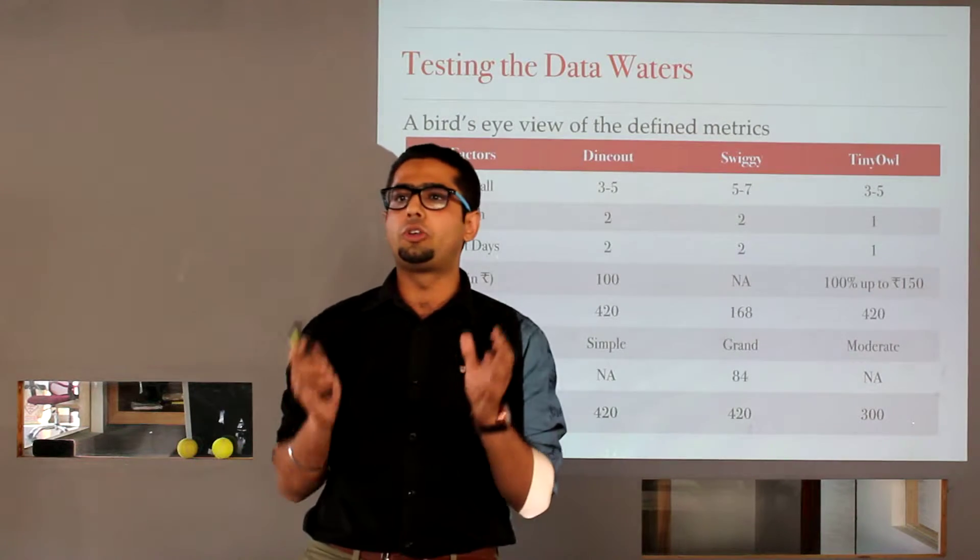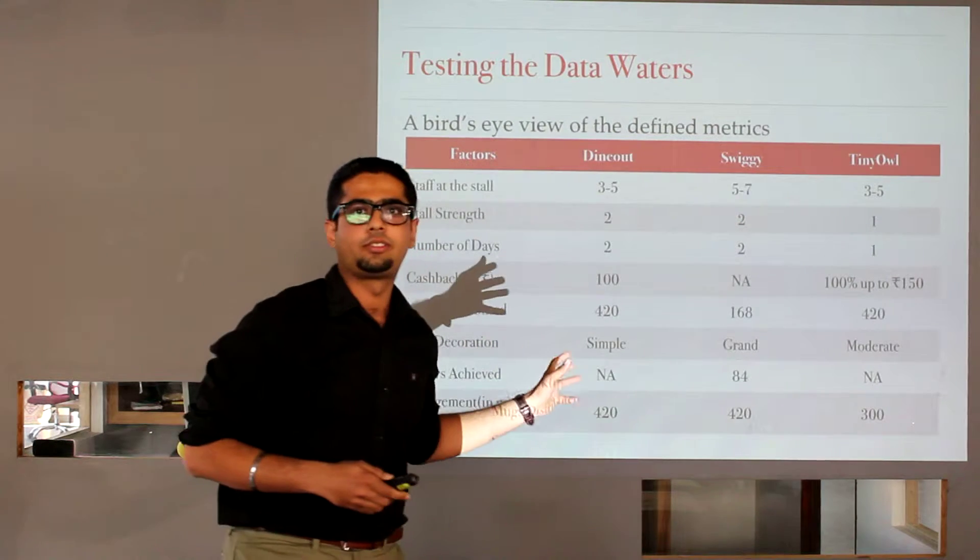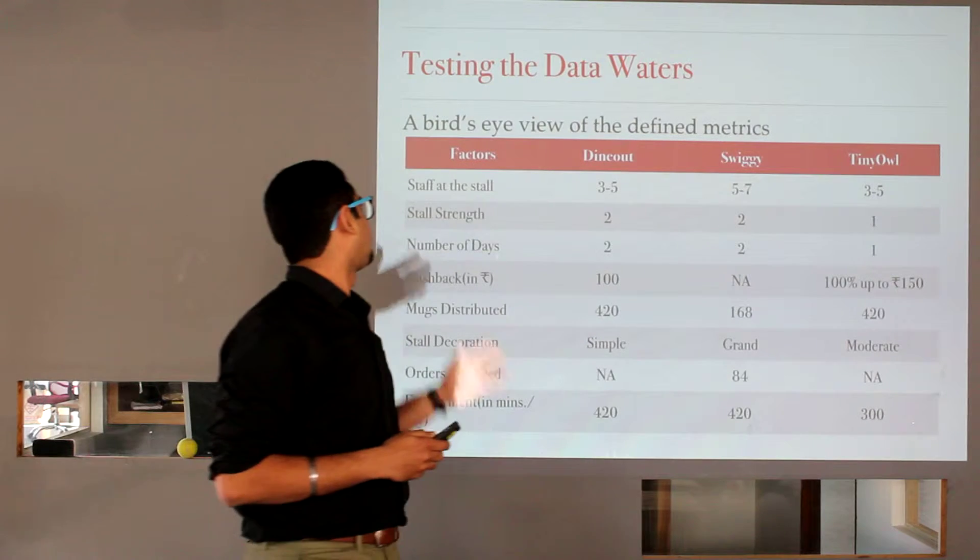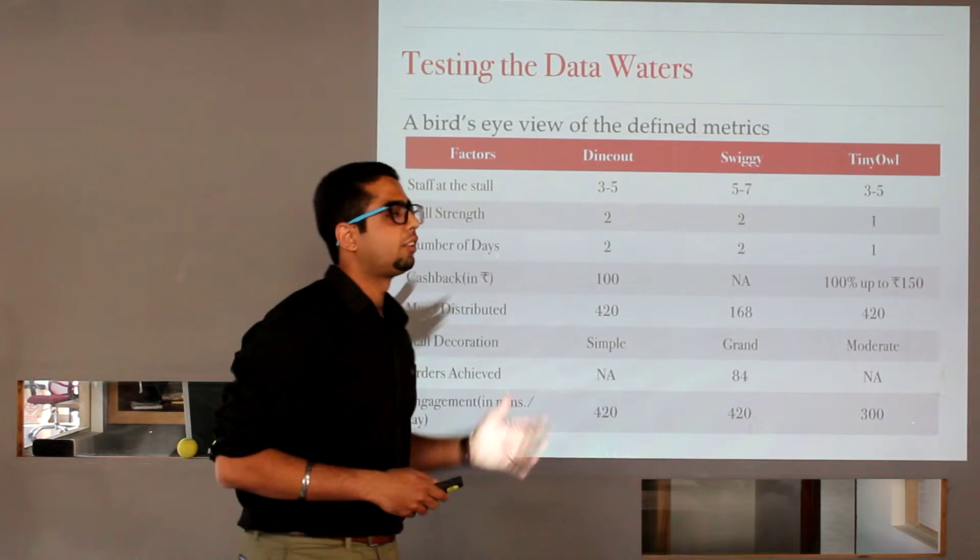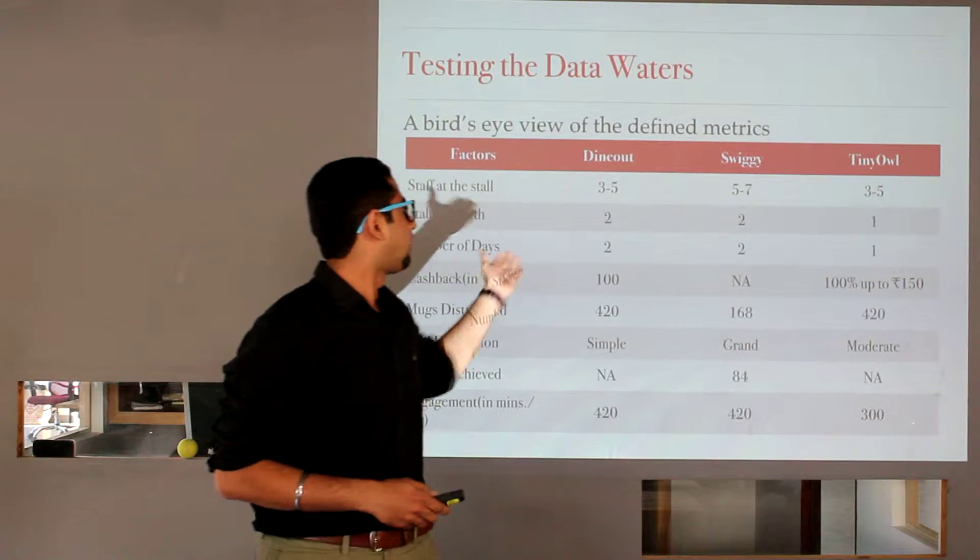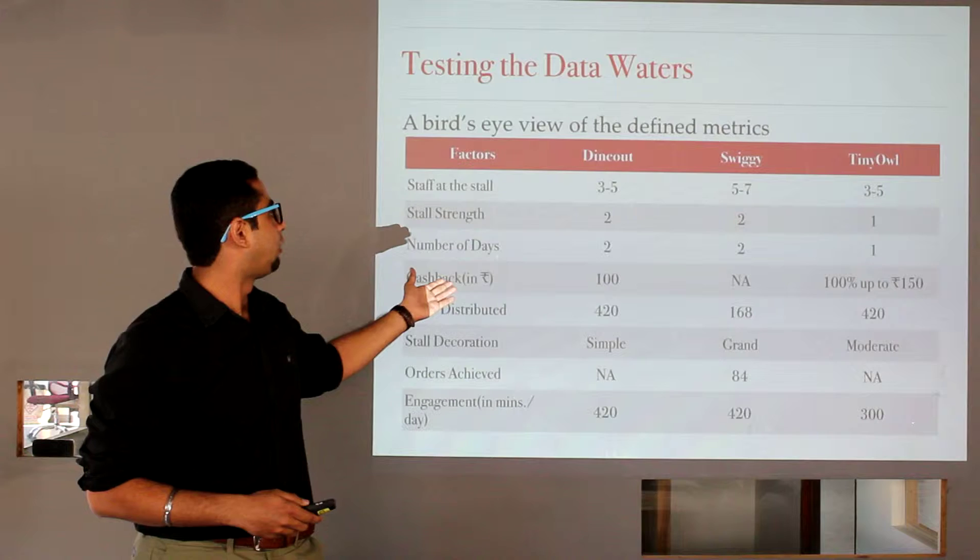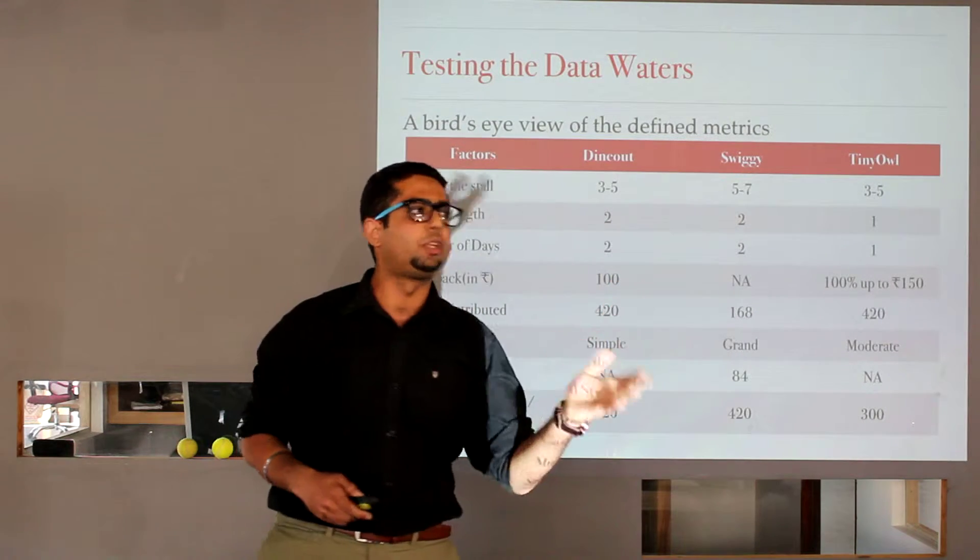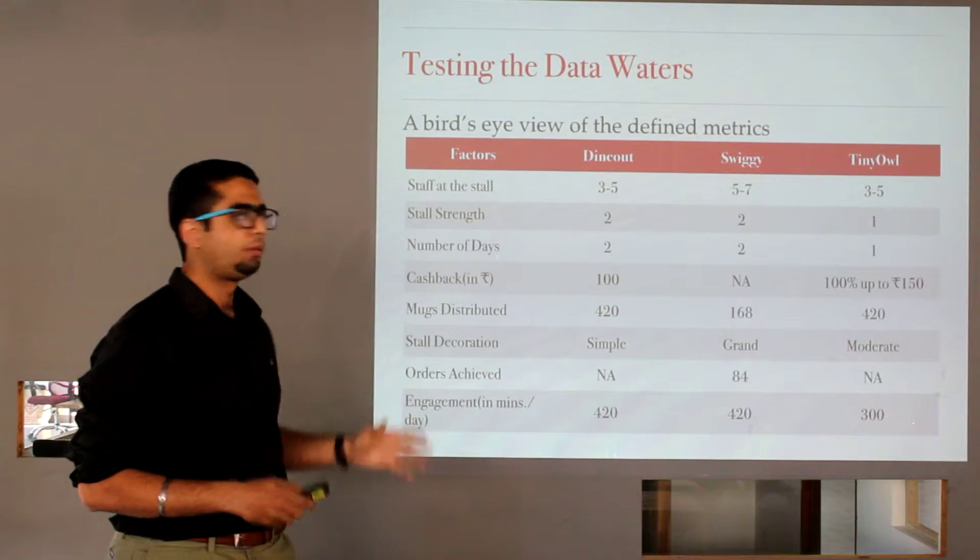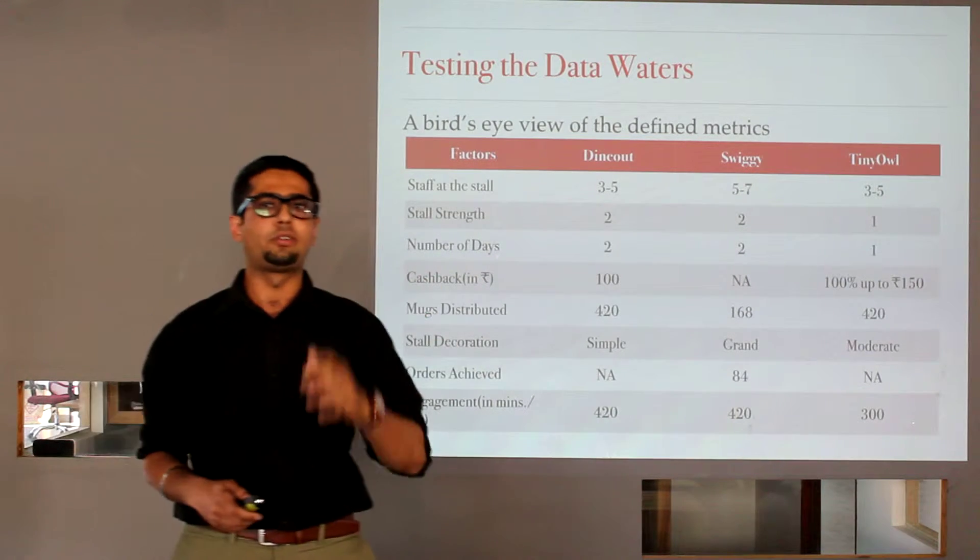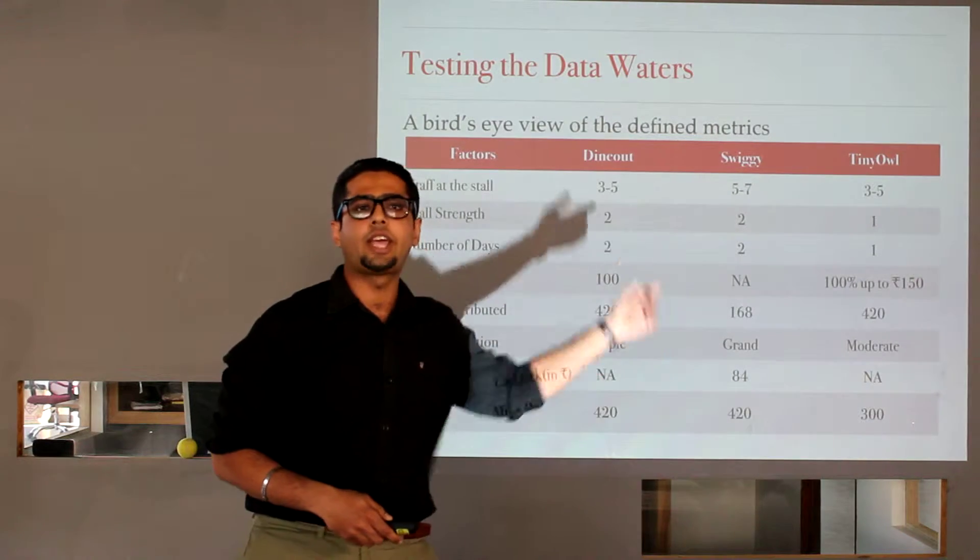Now, we have had a basic overview. We have gone into a bit of details. Let's test the data waters. So here I have defined a few metrics as to how we can proceed with the case study. The first is staff at the stall, the number of people present and executing their business strategy for the respective brand. The stall strength, that is the number of stalls put up in that location. The number of days, which is 2-2-1. TinyOwl was only for one day. The cashback offered. TinyOwl offered 100 rupees. Swiggy had no cashback. DineOut was 100% up to rupees 150. The mugs distributed, the stall decoration I will get into a little bit later. The orders achieved. And the engagement time as mentioned previously was 420, 420, and 300 minutes since TinyOwl was only for one day.